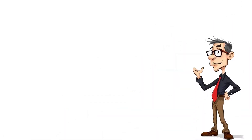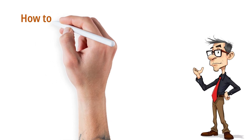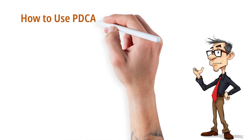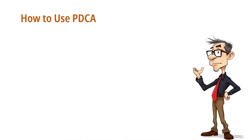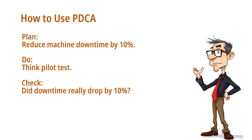How to use PDCA? Here's the breakdown. Plan: define the problem, analyze the data, and set a goal — for example, reduce machine downtime by 10%. Do: implement your plan on a small scale — think pilot test. Check: measure the results. Did downtime really drop by 10%?